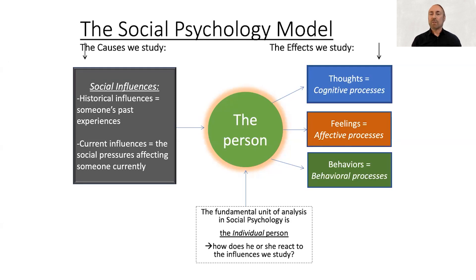The middle box refers to your feelings or emotions, and we call these the affective processes. This relates to the types of feelings that another person may elicit from you. Do they make you feel comfortable? Do they make you feel nervous? Do they make you feel happy? All of these different types of emotional reactions matter and have a great role in the way that you choose to interact with others.